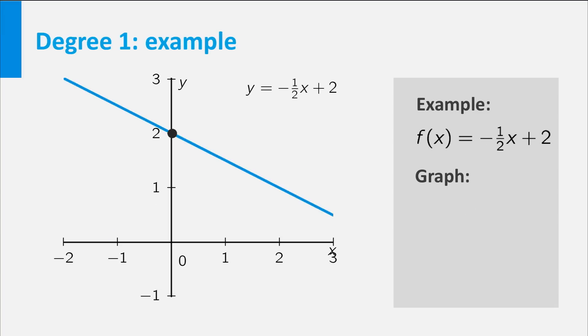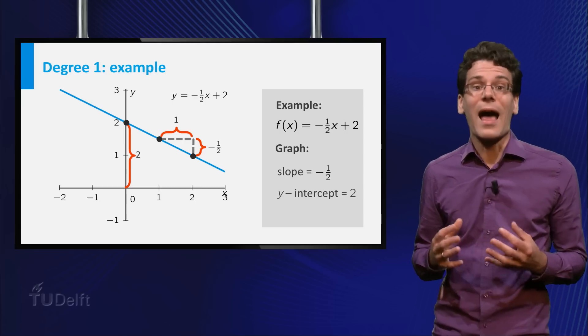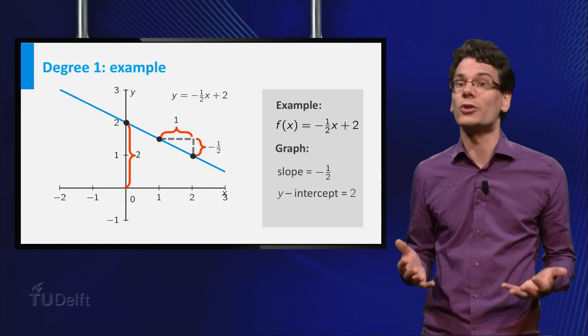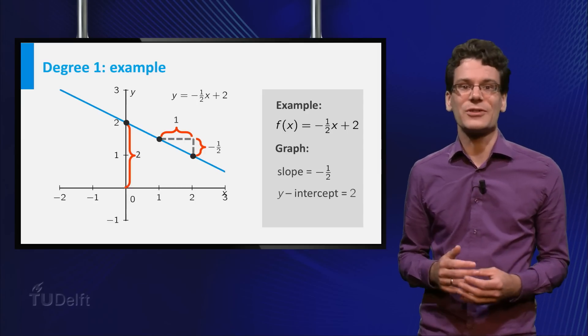For example, let's look at the graph of the linear function f(x) equals minus one-half x plus 2. And indeed you see from the graph that the slope is minus one-half and the y-intercept equals 2. It is surprising how many dependencies between everyday quantities can be modeled by linear functions. You will see examples of such dependencies in the exercises.